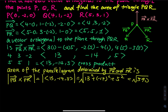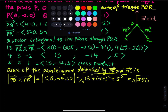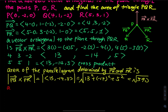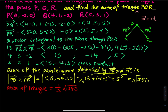And therefore the triangle area is one half times base times height, which is half of the parallelogram. So the area of the triangle equals one half times the square root of 390. That answers the second question.